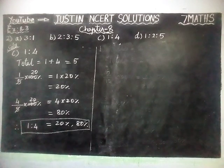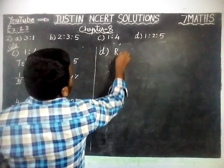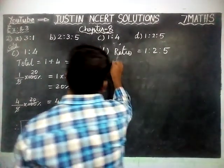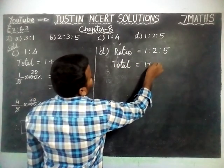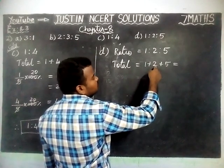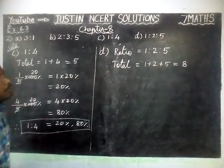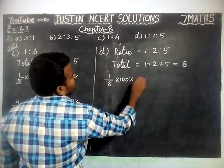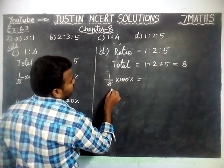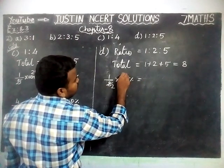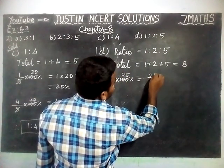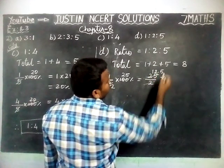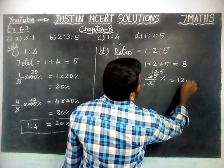Next, we are going to see part D. The ratio is equal to 1 is to 2 is to 5. Total is equal to 1 plus 2 plus 5, which equals 8. First part: 1 divided by 8 into 100 percentage. We simplify by 4 — 2 fours are 8, 25 fours are 100 — giving 25 divided by 2 percentage. Simplifying again, 12.5 percentage.